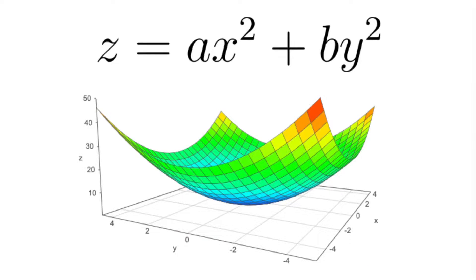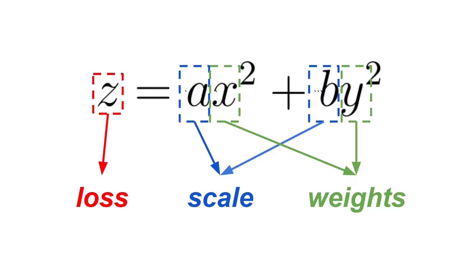As I said in the beginning of this video, we'll focus on gradient descent based models and to simplify things we are going to show what happens when we are trying to find the optimum of the function z equals ax squared plus by squared while playing with the coefficients of the input variables. You can think of z as the loss, x and y as the weights, and a and b as the scaling factors of your features.